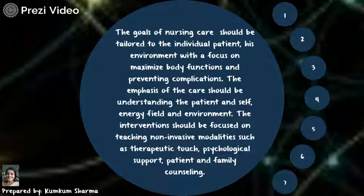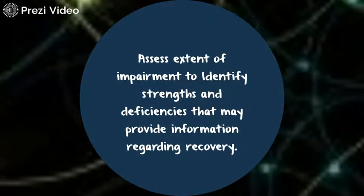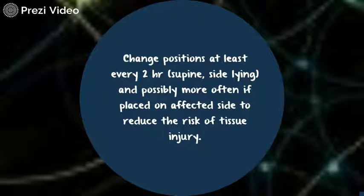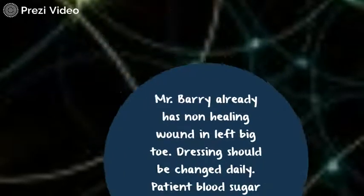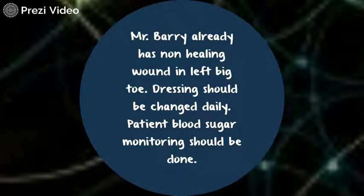The first nursing intervention for Mr. Barry would be to assess the extent of impairment to identify strengths and deficiencies that may provide information regarding recovery. Next is to change positions at least every two hours, and possibly more often if placed on affected sites, to reduce the risk of tissue injury. Additionally, Mr. Barry already has a non-healing wound on his left big toe; dressing should be changed daily and his blood sugar should be monitored.